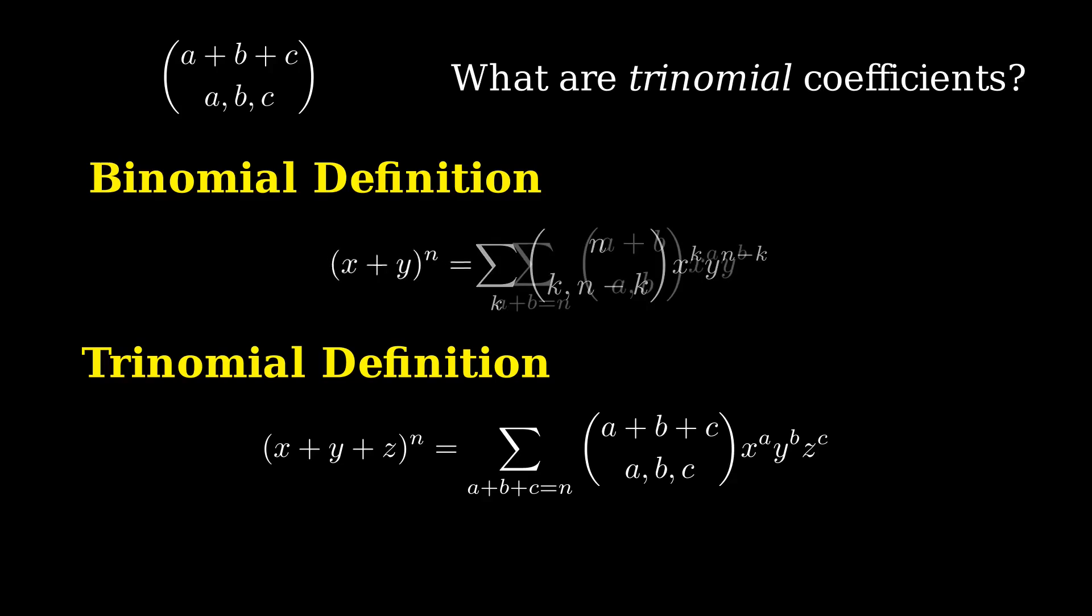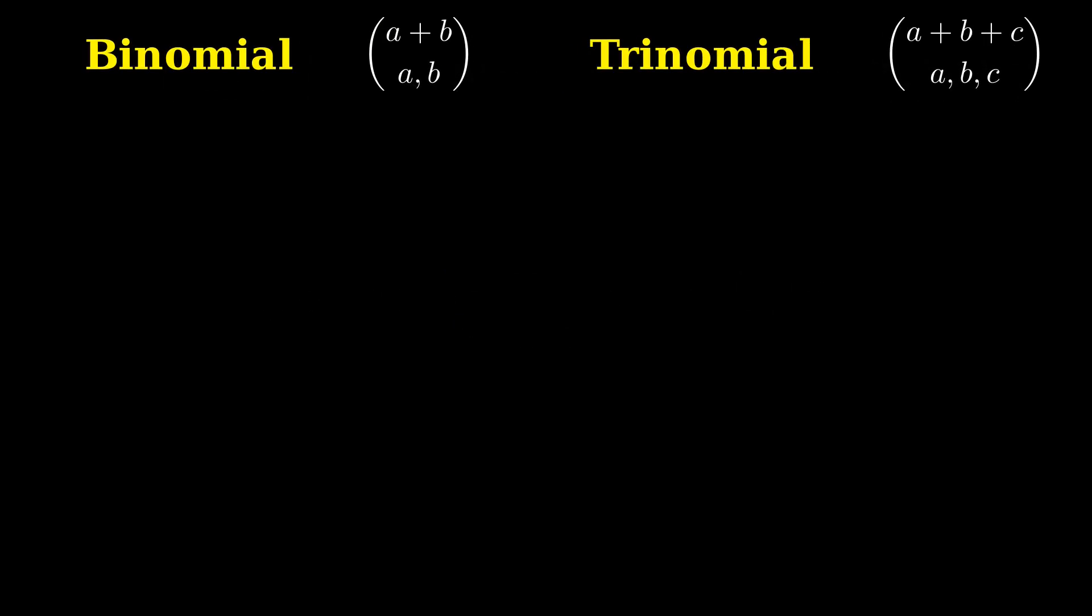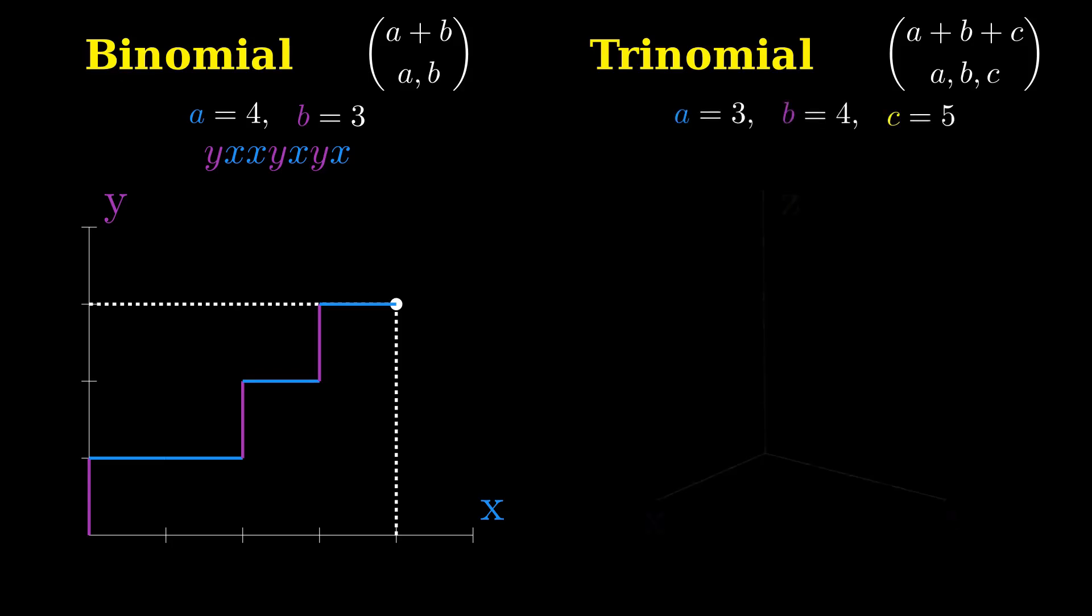I often think of the binomial coefficient this way: (a + b) choose a as the number of paths from the origin to the point (a, b) taking unit steps in either the x or y directions. That's a plus b total steps, any a of which are in the x direction. Analogously, (a + b + c) choose (a, b, c) is the number of paths from the origin to the point (a, b, c) taking unit steps in the x, y, and z directions. Pretty reasonable generalization, wouldn't you say? You can even see how this argument can go beyond just three dimensions, but we don't have to do that today.